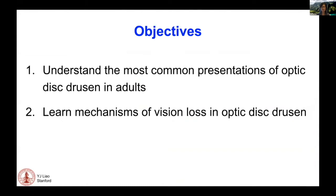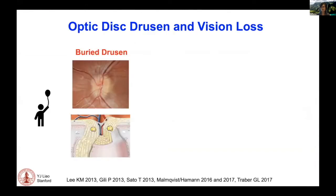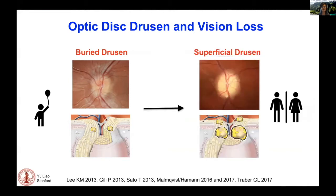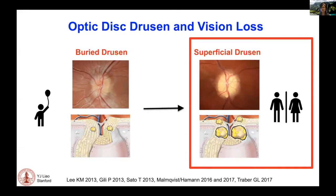We will also talk about some mechanisms of vision loss in Optic Disc Drusen. Optic Disc Drusen occurs often in childhood, and they can look predominantly buried. In adulthood, the drusen migrate anteriorly, become larger, and can obstruct nearby structures. I'm going to focus on the adult side, and Dr. Barris, who is speaking after me, will talk about pediatric Optic Disc Drusen.